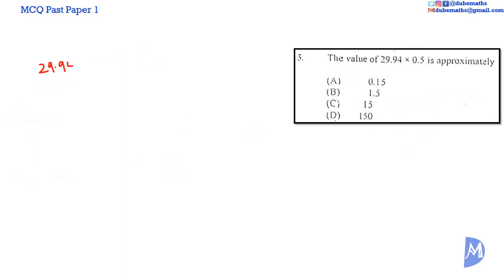29.94 multiplied by 0.5 is approximately 30 multiplied by 0.5, which is approximately 30 multiplied by one half, which equals 15. So the answer is C.